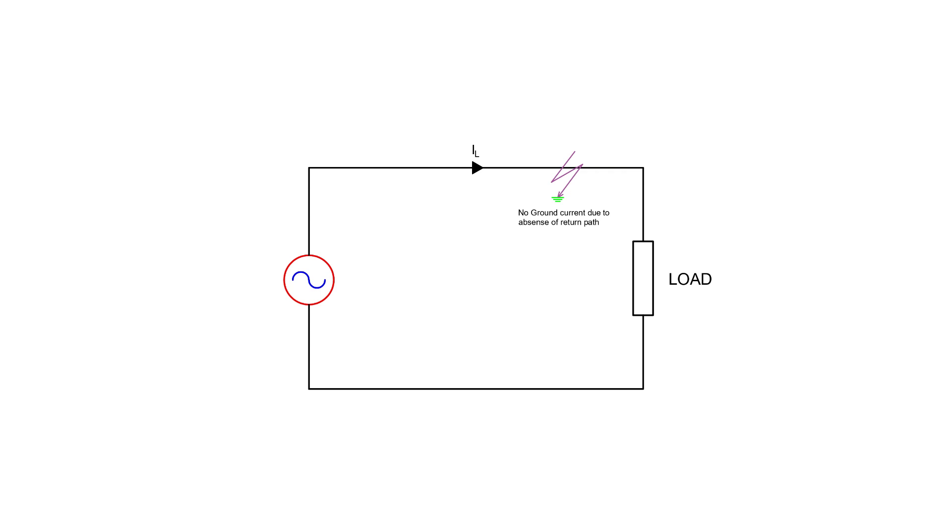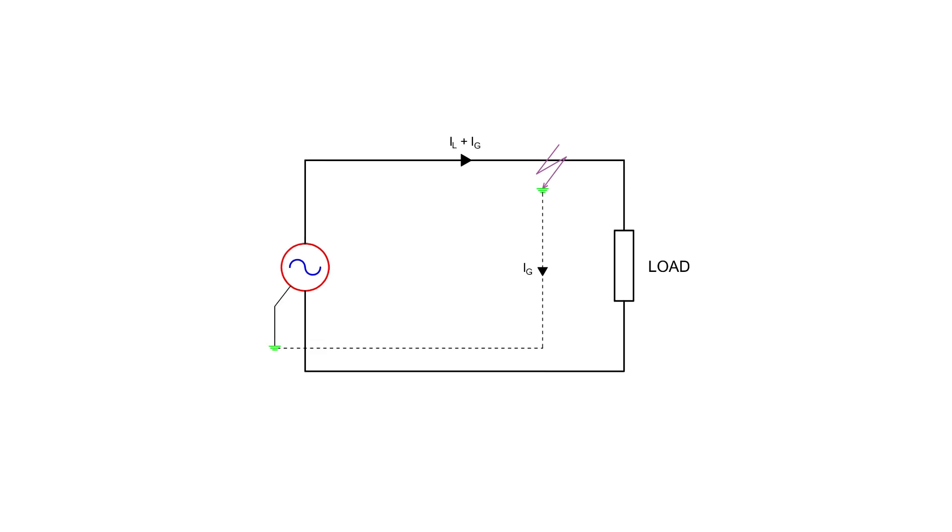Take a look at this example. When there's no neutral grounding, earth fault currents can't flow because there's no return path. However, with grounded neutrals at the source, the fault current finds a clear path to the source, allowing protection systems to function effectively.